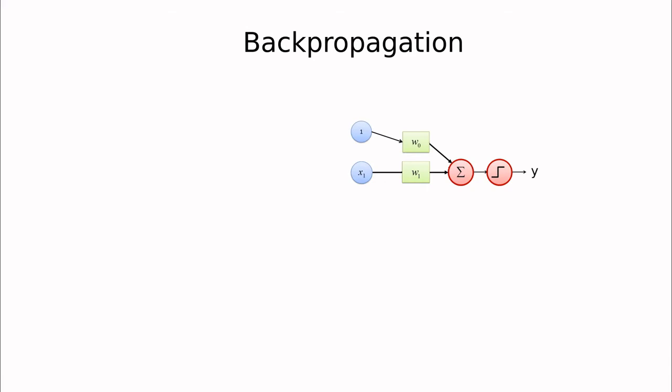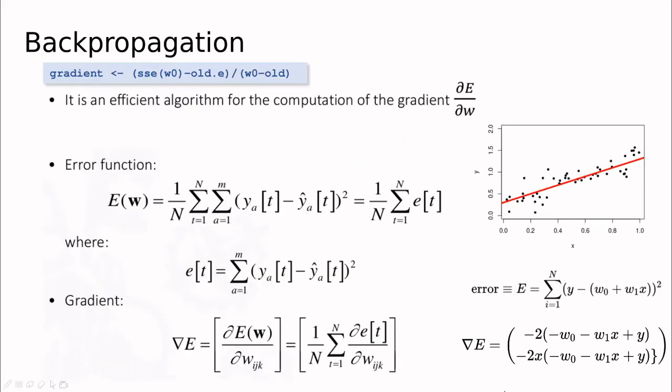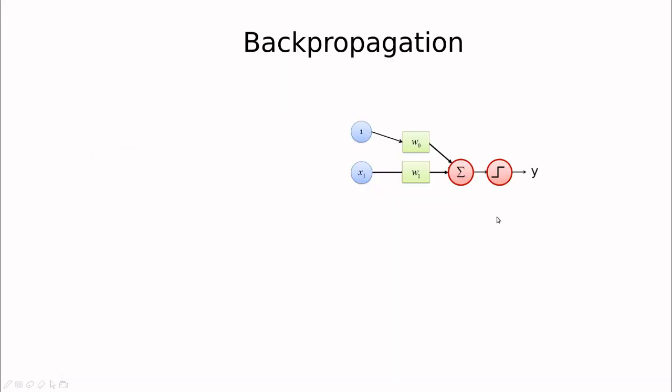So here is the idea of backpropagation. We don't know how to do this in general because this is going to be mathematically impossible when we are coupling neurons and neurons, but let's do this iteratively. So let's start with a very simple neuron. We have one bias and one weight, and the first step is to guess the initial weights. This could be random.